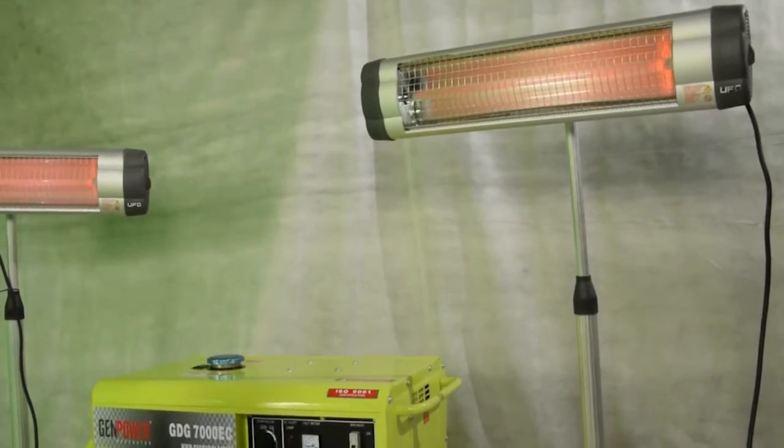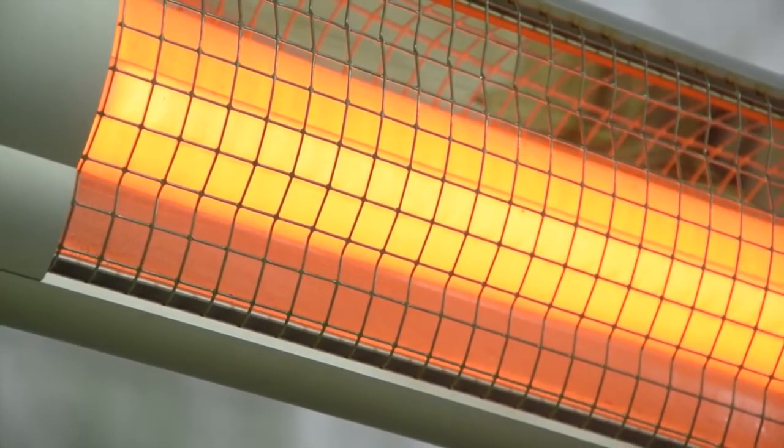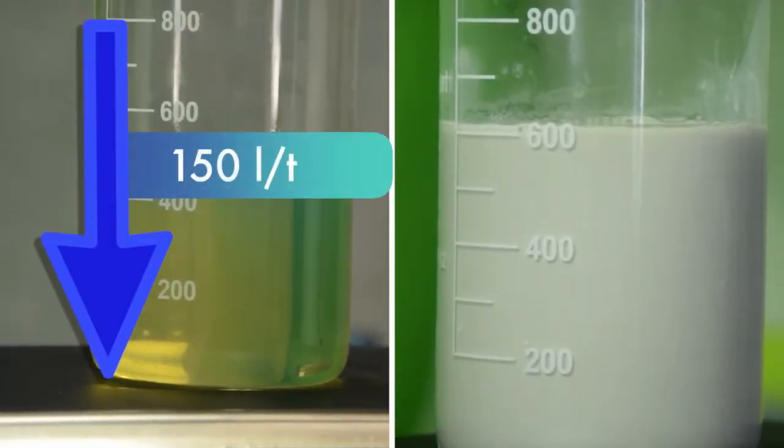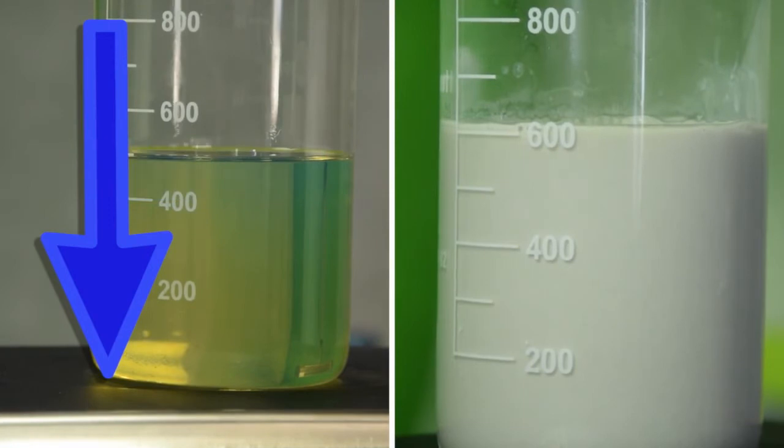In the result, the emulsion allows to reduce fuel consumption by 150 liters per ton, as well as reduce exhaust system contamination and the amount of smoke in the exhaust.